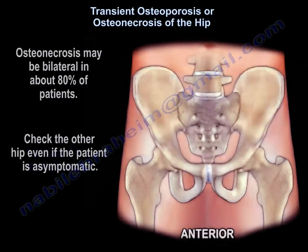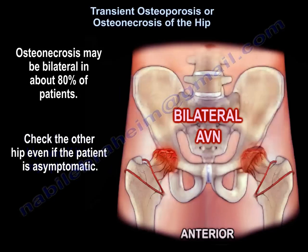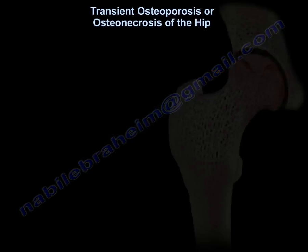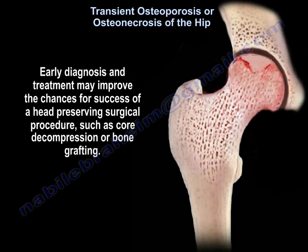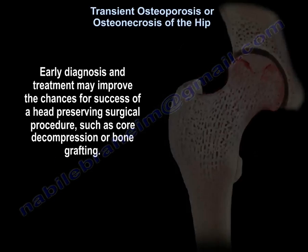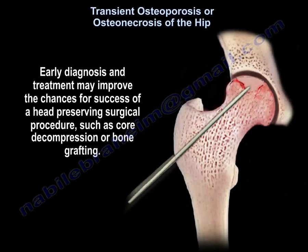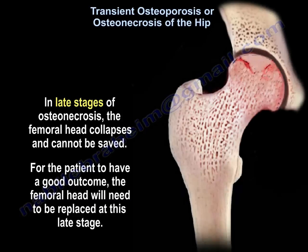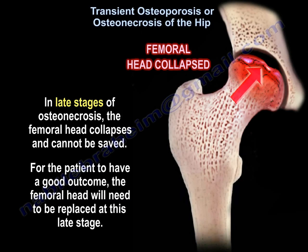Osteonecrosis may be bilateral in about 80% of patients. Check the other hip even if the patient is asymptomatic. Early diagnosis and treatment may improve the chances for success of a head-preserving surgical procedure such as core decompression or bone grafting. In late stages of osteonecrosis, the femoral head collapses and cannot be saved. For the patient to have a good outcome, the femoral head will need to be replaced at this late stage.